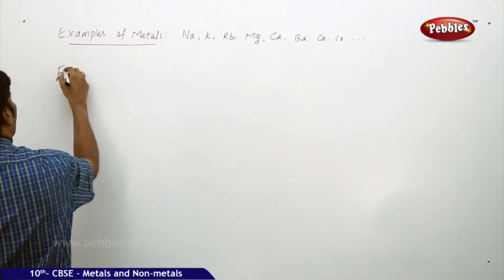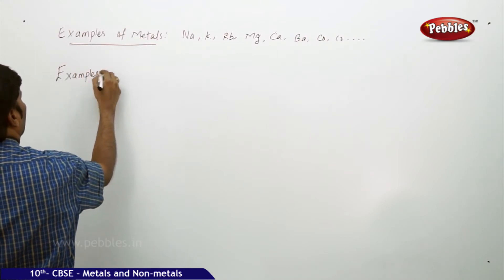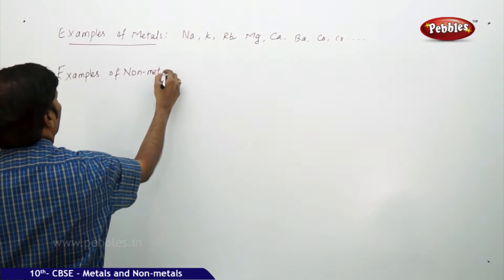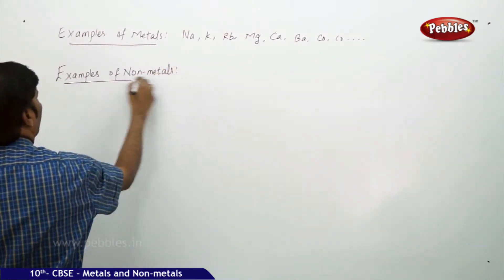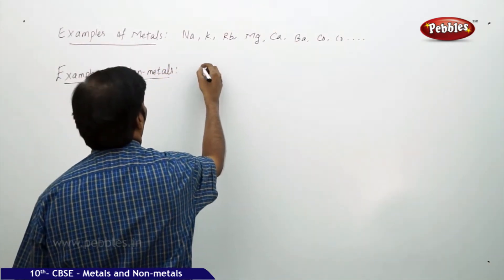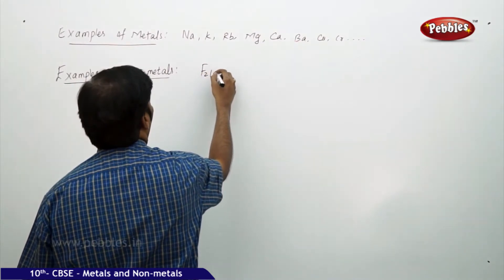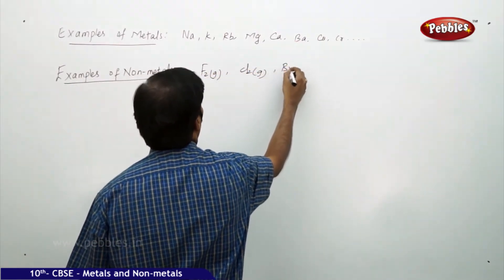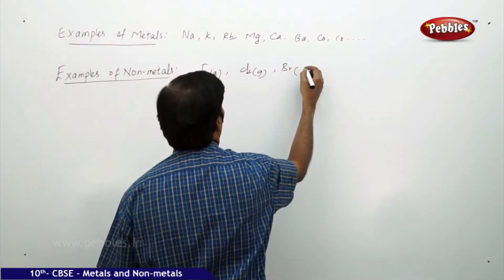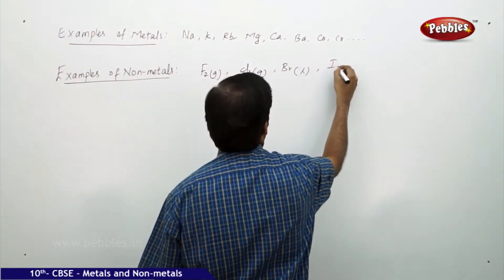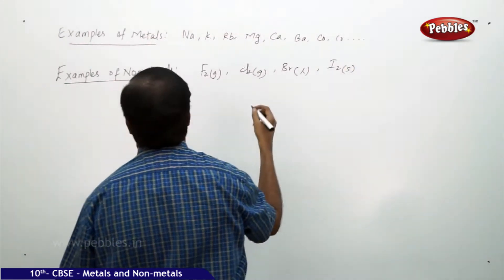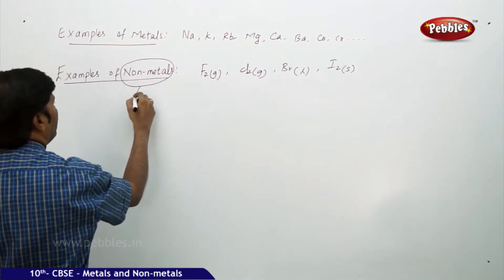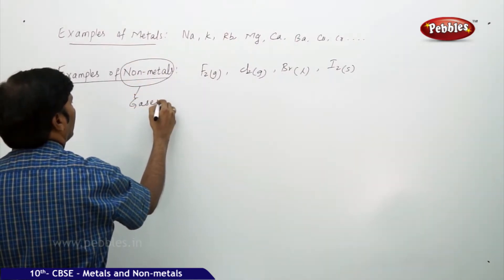Examples of non-metals: chlorine gas, bromine liquid, and iodine solid, and so on. Usually, all non-metals are gases.